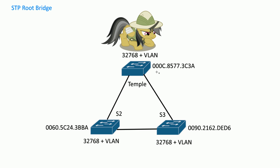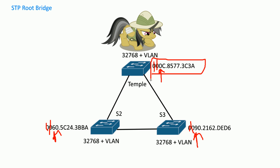The next tiebreaker is the MAC address — who has the lowest MAC address? Looking at them, they all tie on the first several octets. Here we have a 6 and here we have a 9, so right away we can tell that this is the lowest MAC address out of all of them in this switching network.